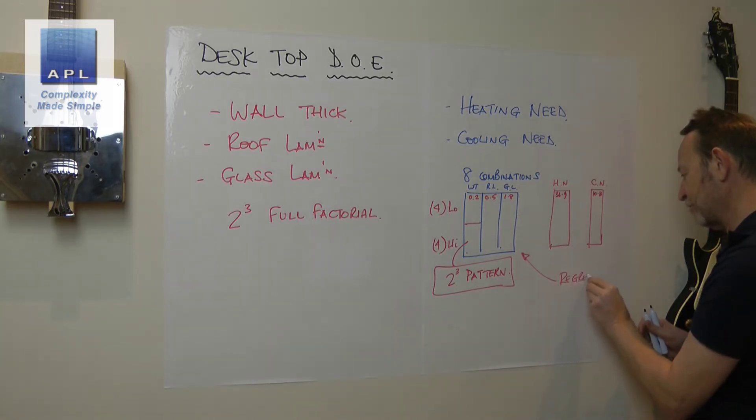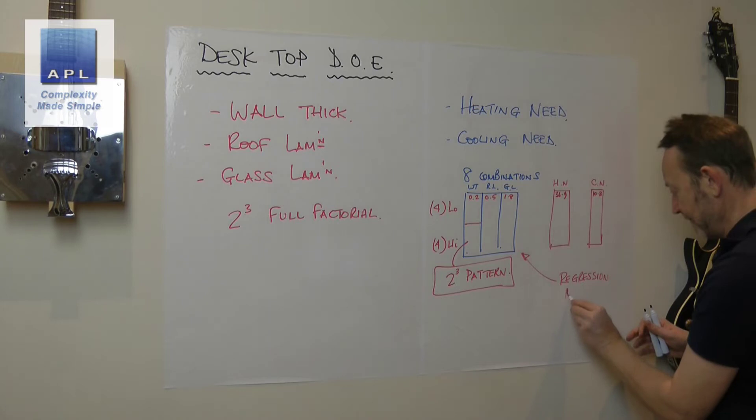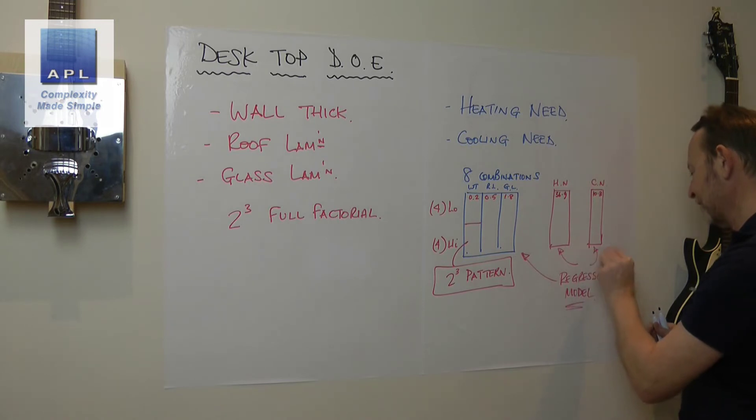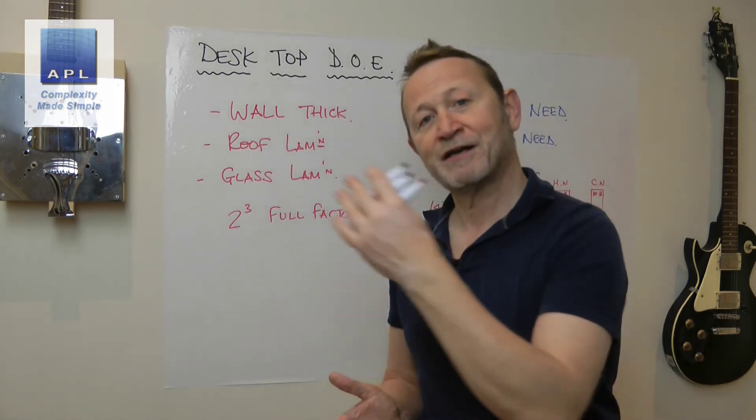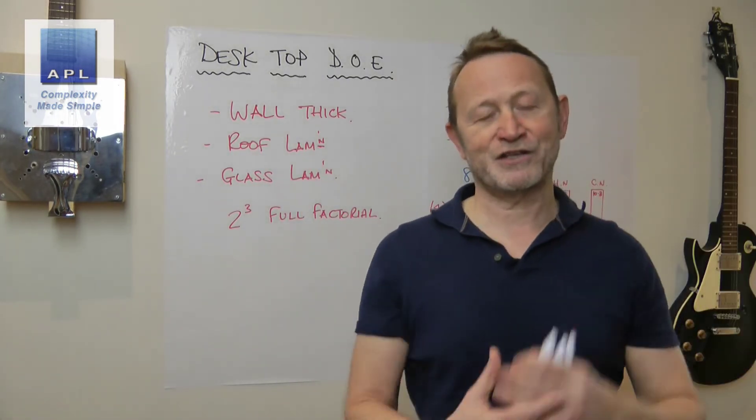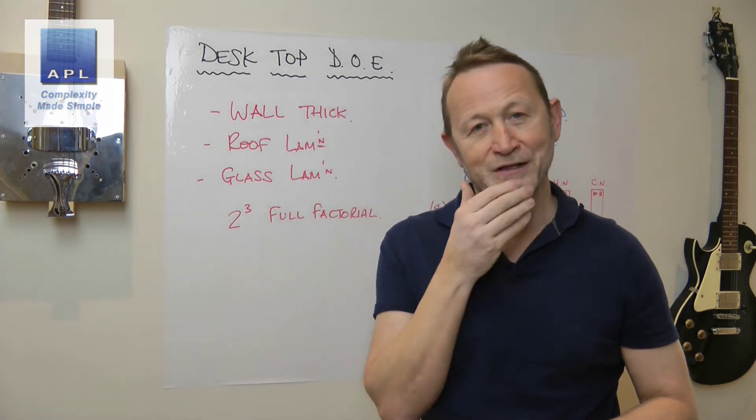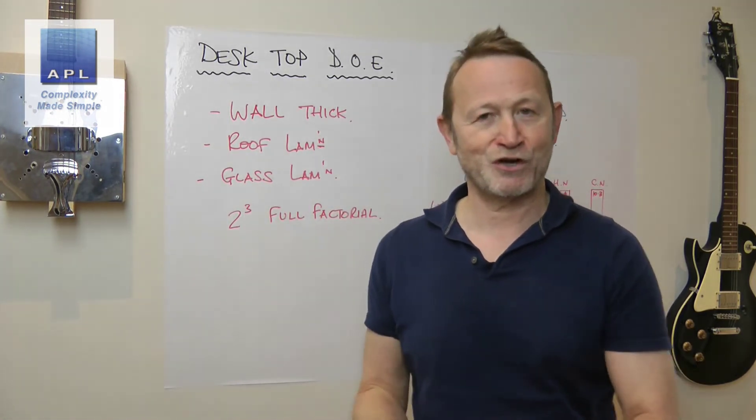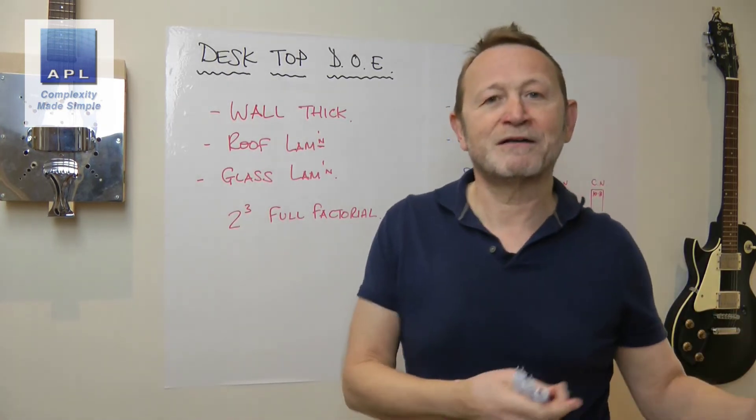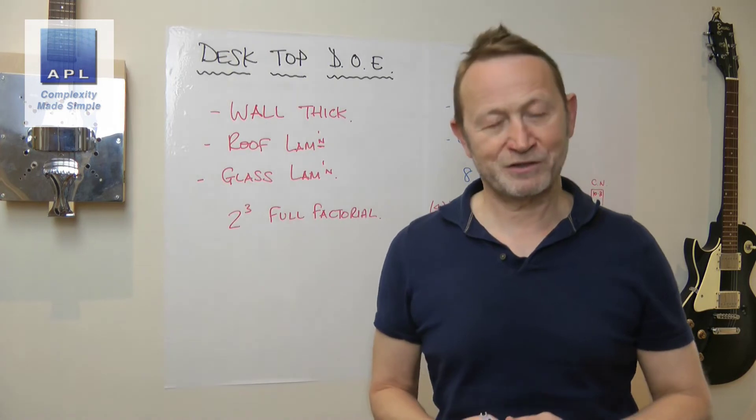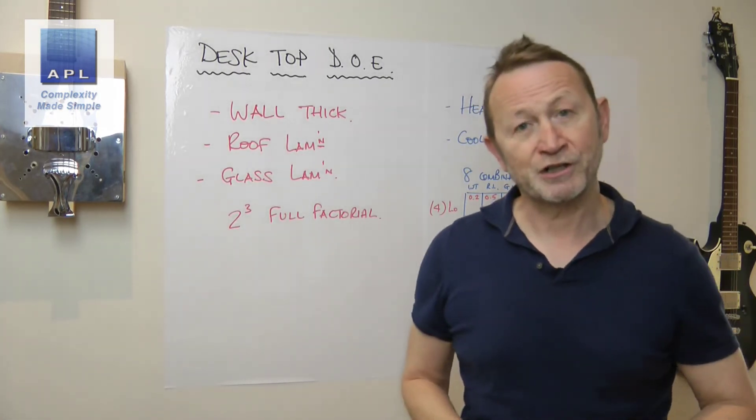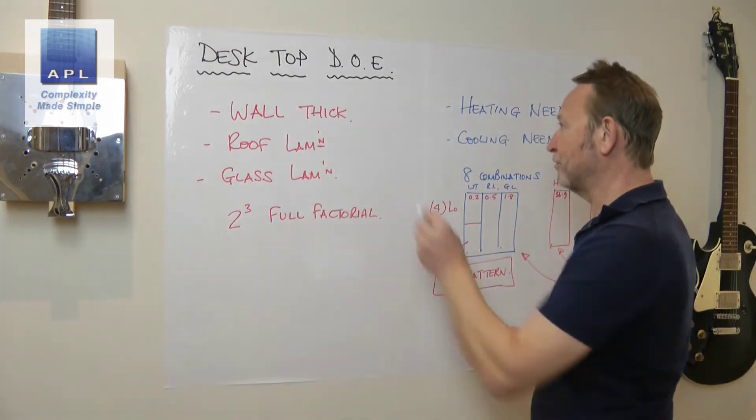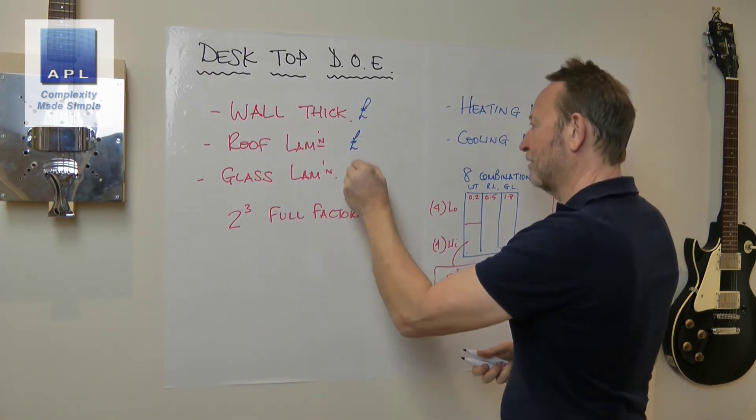And then what we can do is we can create a regression model for that and a regression model for that. And then of course we can ask the computer can we hit this cooling need and this heating need both at the same time, so we can hit a sweet spot for a house design so that it's cool in the summer and it's warm in the winter and we have the best design of the house in terms of its insulation.